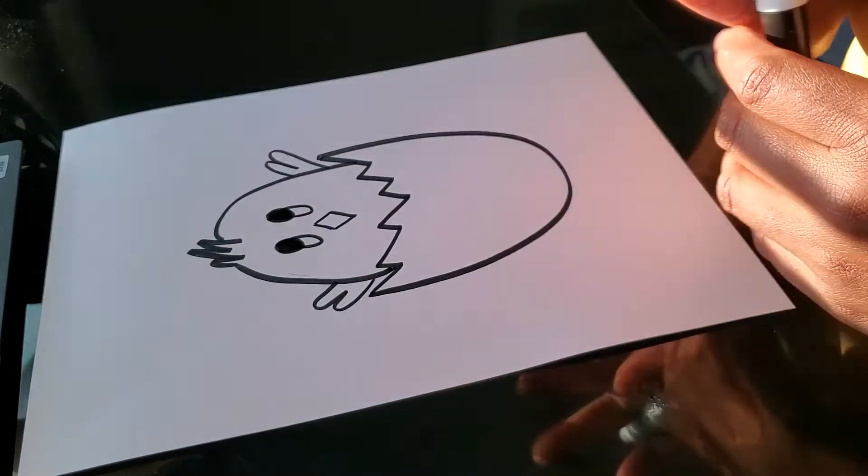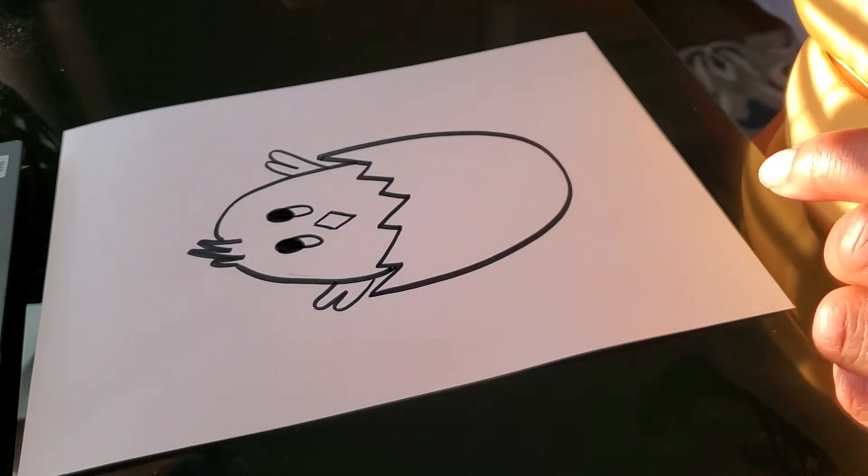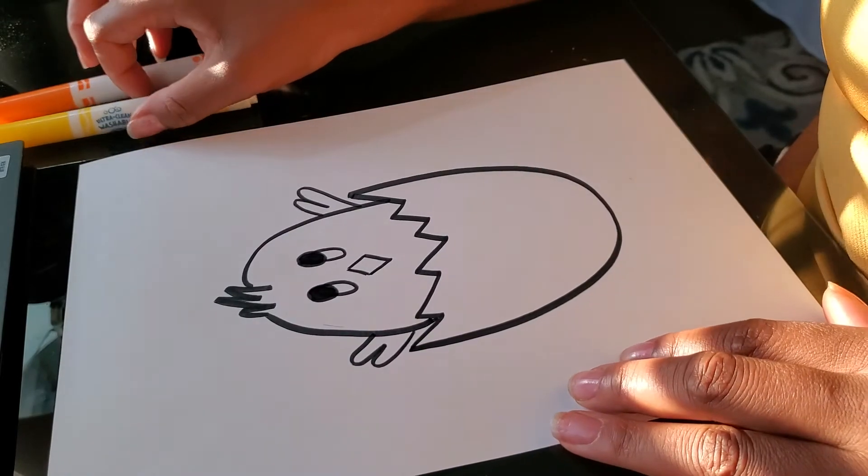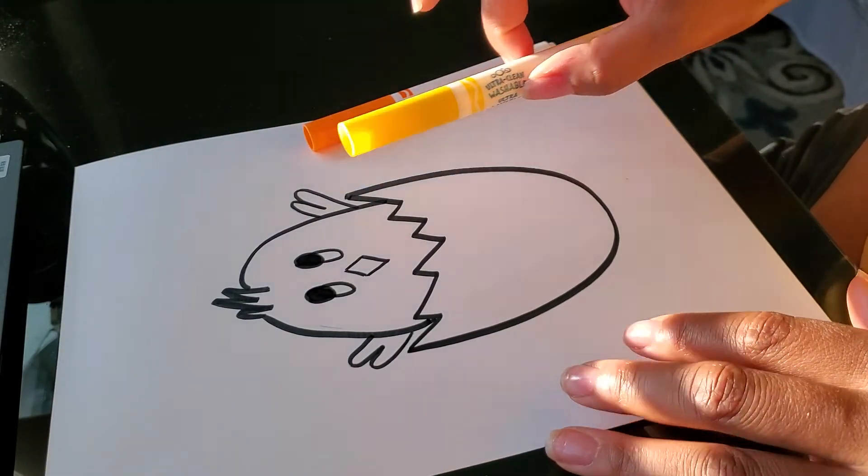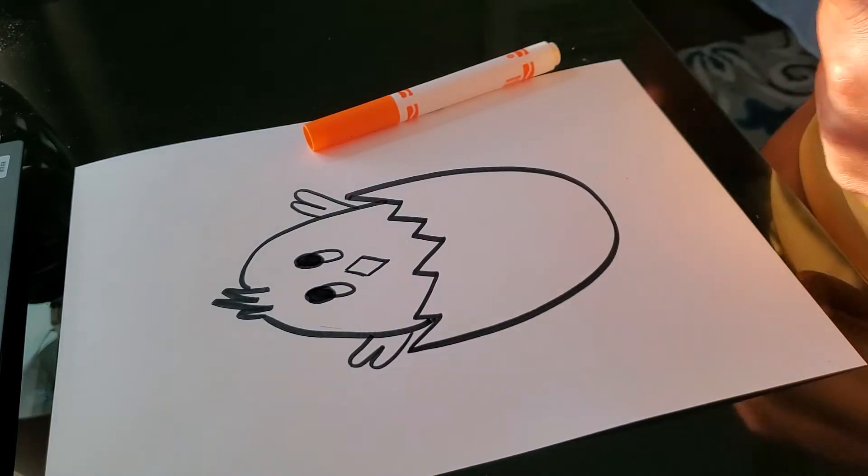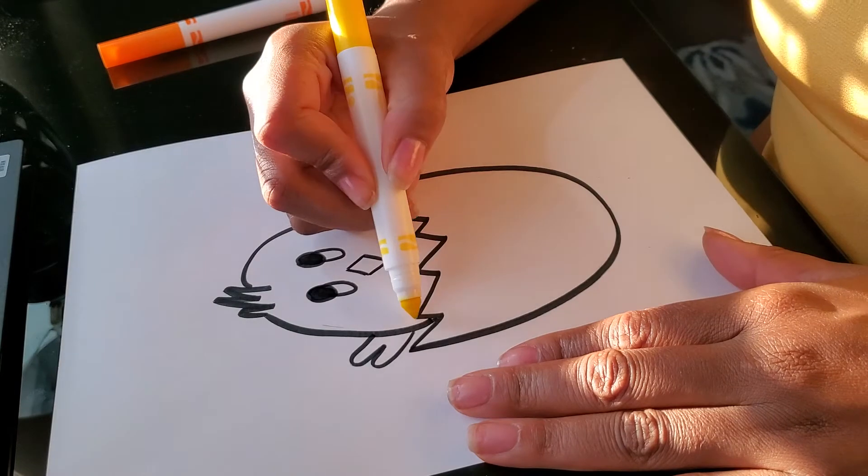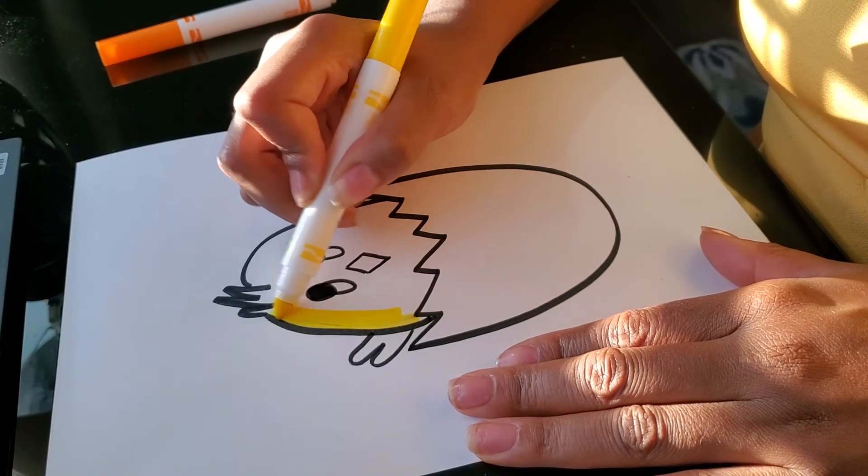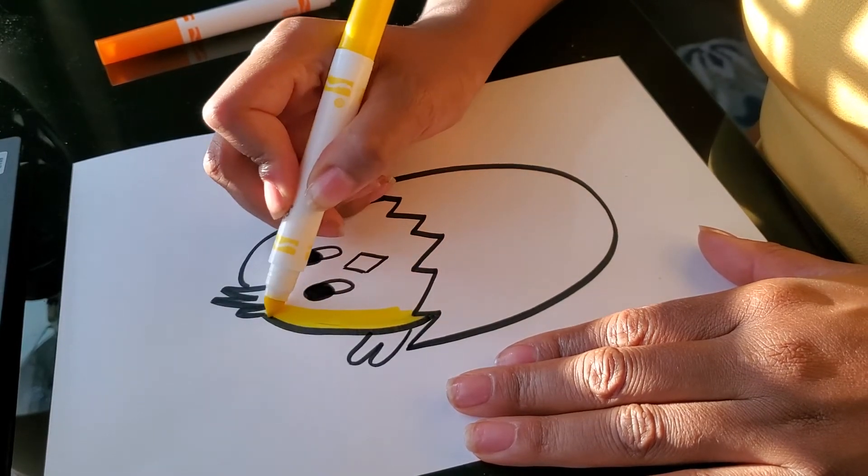Now, it's time for us to color our chick. Please take out yellow and orange. First, we're going to use yellow to color in our chick. Remember that you can color darker yellow by adding more layers. I'm coloring dark yellow around the edges.